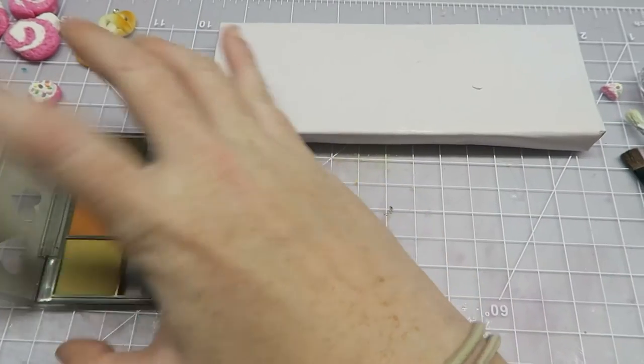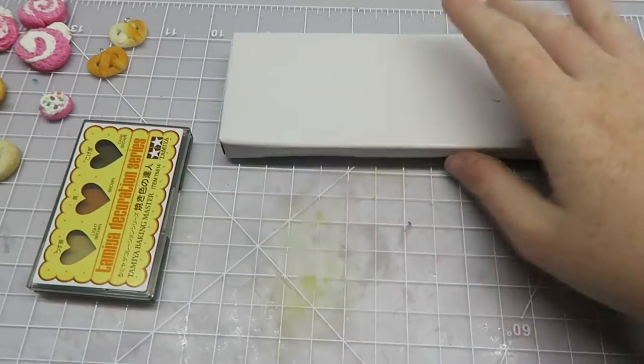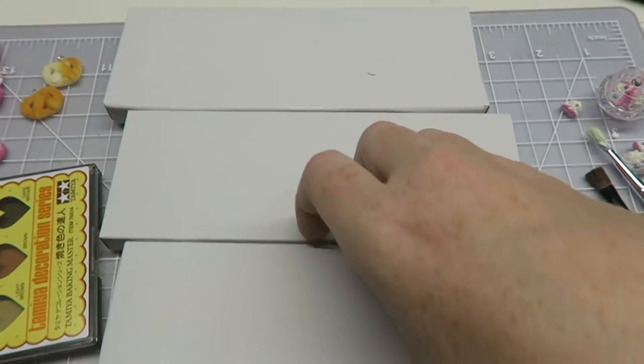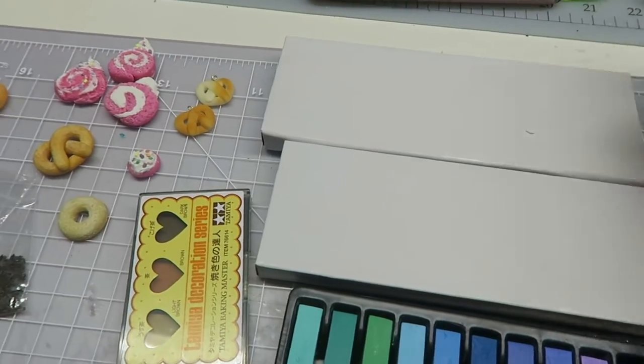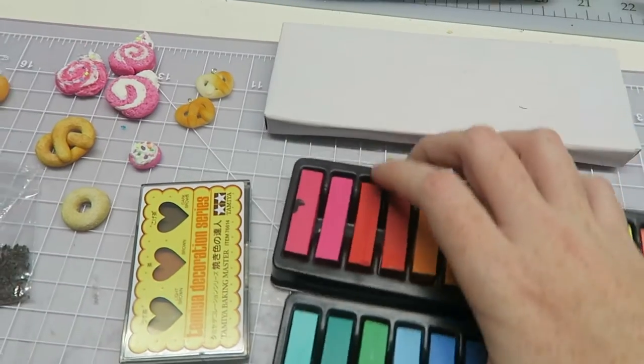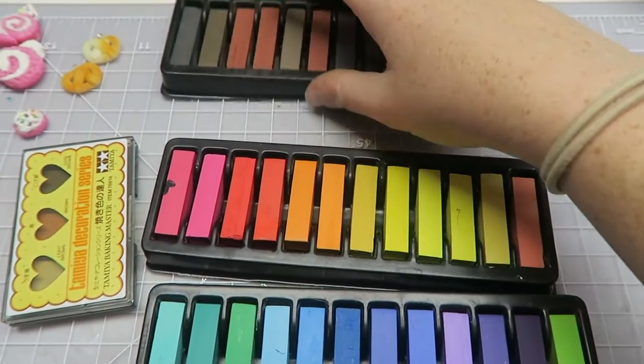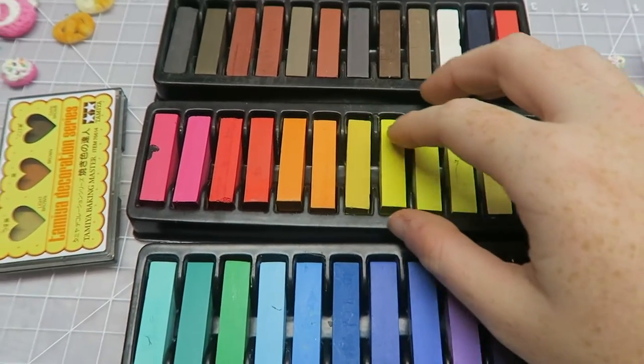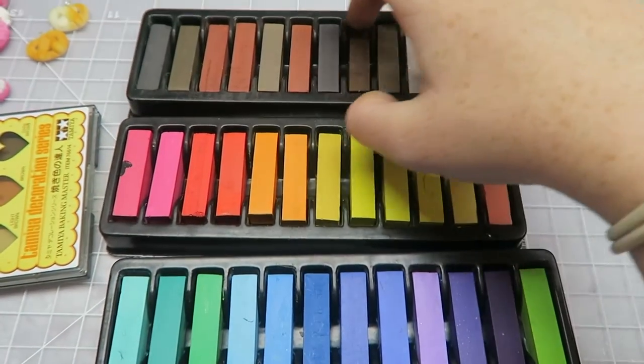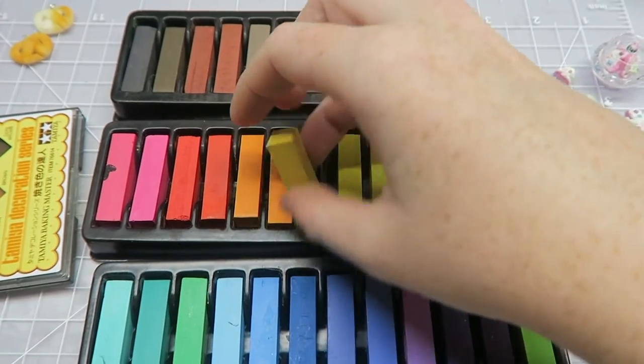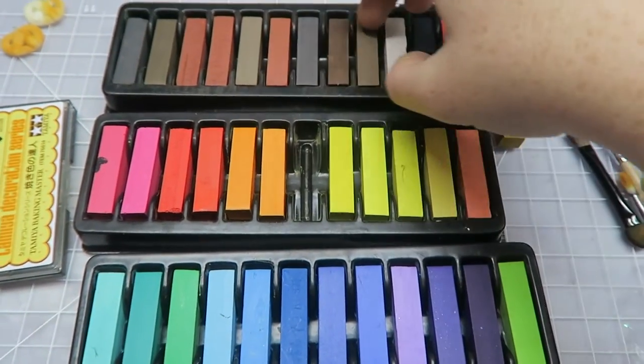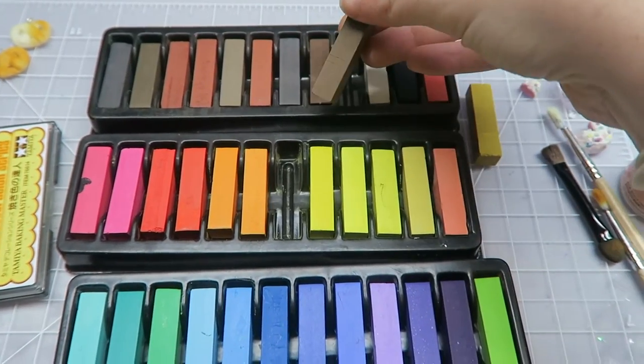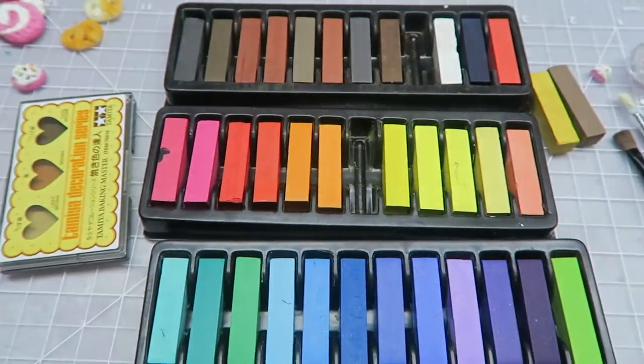What I want to show you next is just a comparison between the baking master set and the chalk pastels. The first thing that you want to notice is that chalk pastels usually come in multiple layers and they're quite a bit bigger, the whole set, than the baking master set. They come in a lot of different shades but they aren't made specifically for using on miniature baked goods. Sometimes they don't have the best color selection, just depends on what project you're working on.